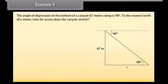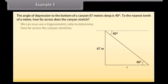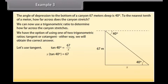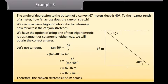The angle of depression to the bottom of a canyon 67 meters deep is 40 degrees. To the nearest tenth of a meter, how far across does the canyon stretch? Start by drawing a diagram. The angle is 40 degrees from the horizontal. We use tangent: tan 40° = 67 / x, so x × tan 40° = 67, giving x = 67 / tan 40° = 87.46 meters ≈ 87.5 meters. Therefore, the canyon stretches 87.5 meters across.